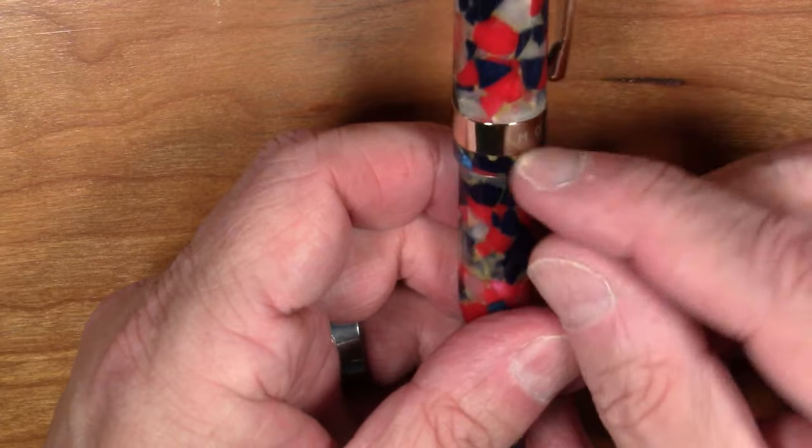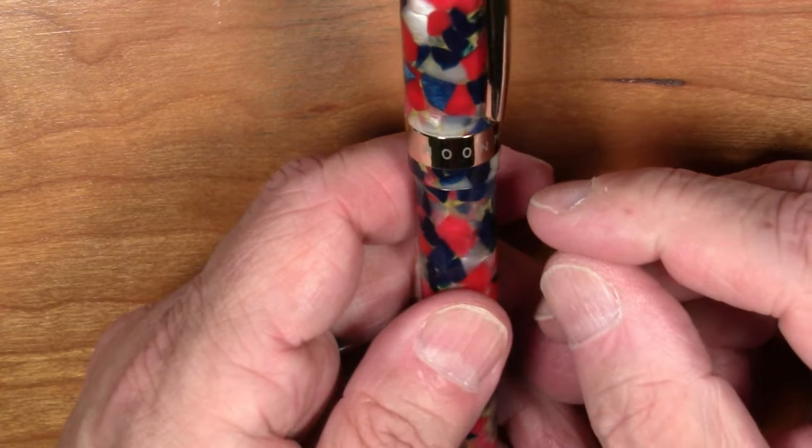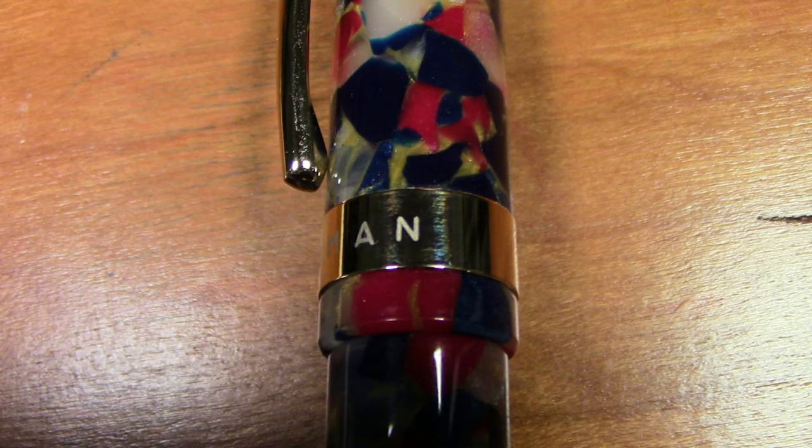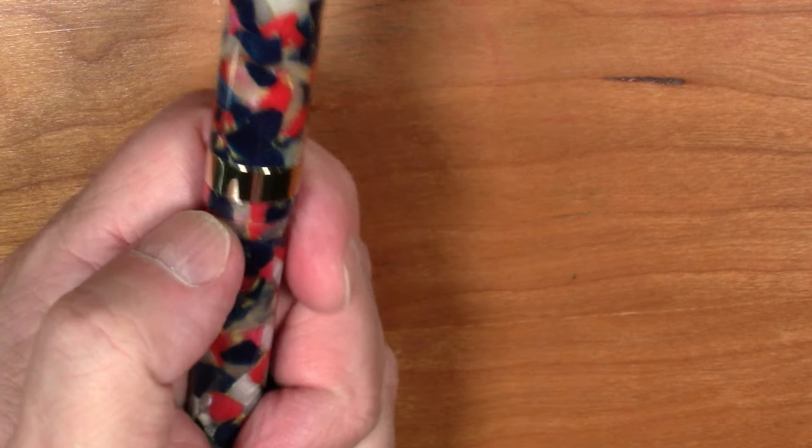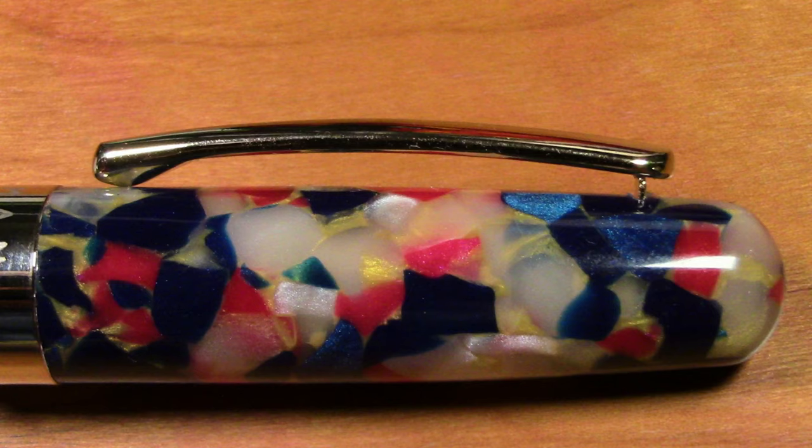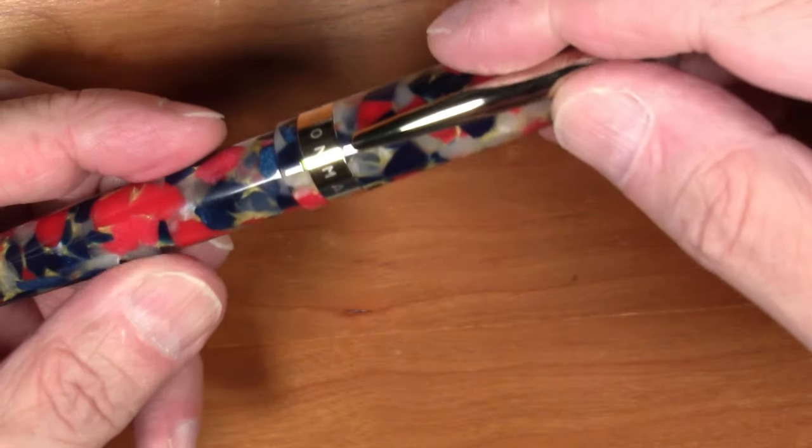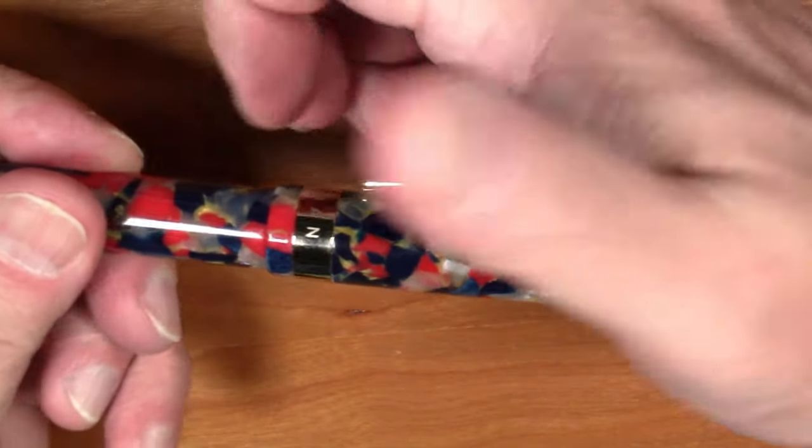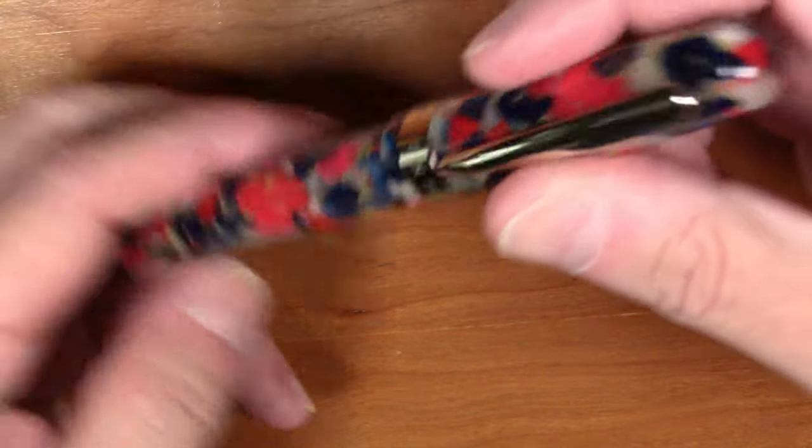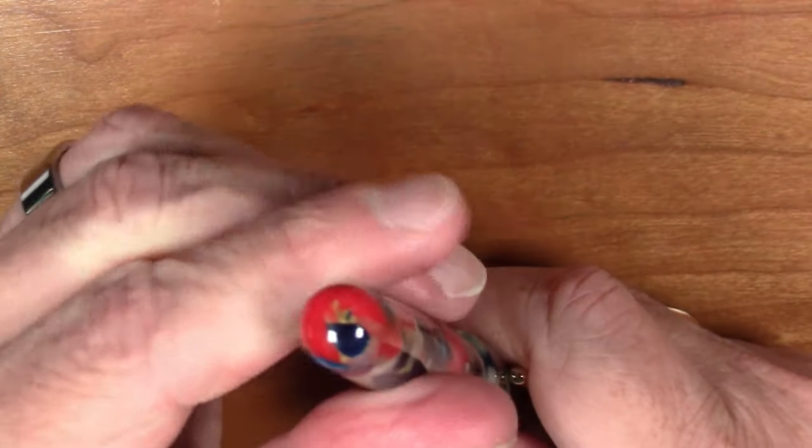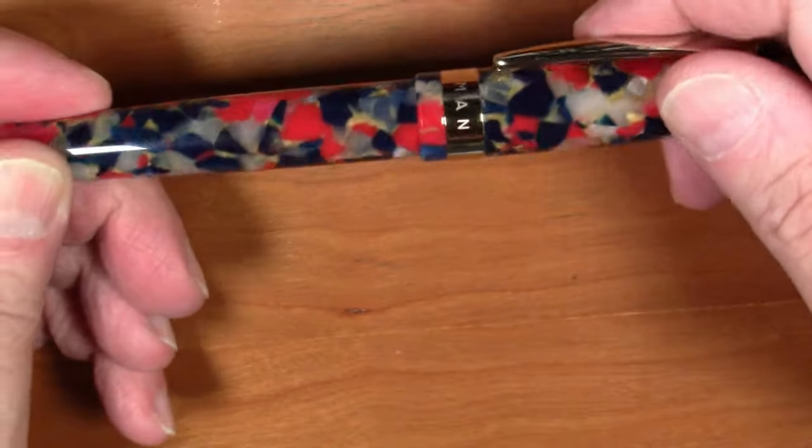The cap band is a nice gold-colored cap band that says Moonman etched around the band and nothing else. The clip is a sort of swooping, arch-shaped clip that is extremely stiff. But clearly, it'll get the job done. This definitely has a lot of tension going on in the clip. Nothing on either of the finials. So the cap and the end of the barrel are just simply round.